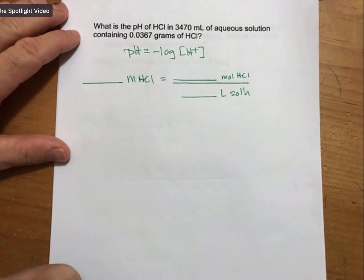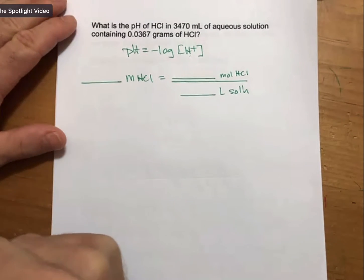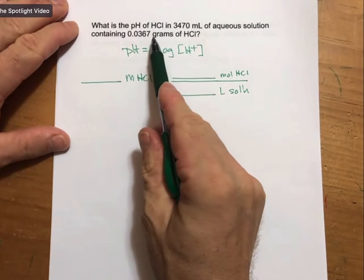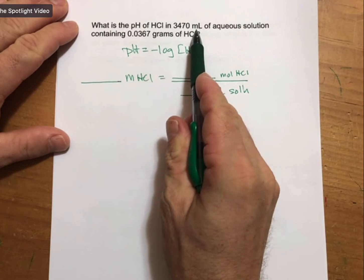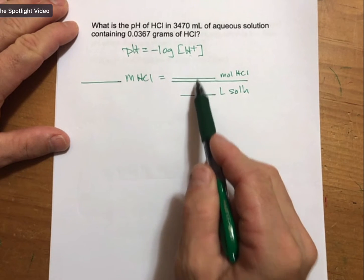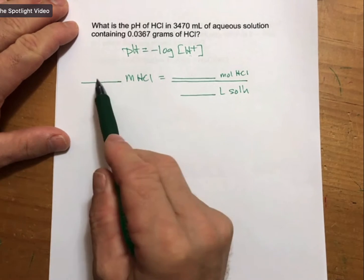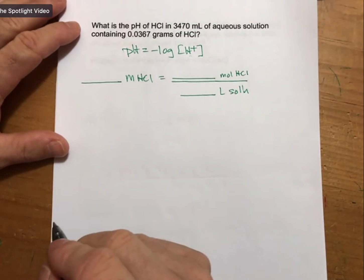So whenever I'm trying to find a molarity as part of a problem, and I'm given my grams and my volume, I can know that I'm going to be able to plug those right in here, and then divide to get my molarity.